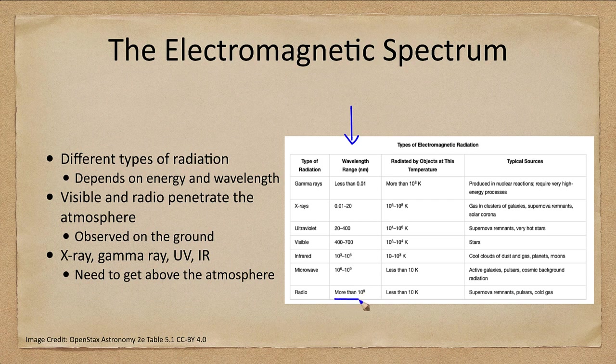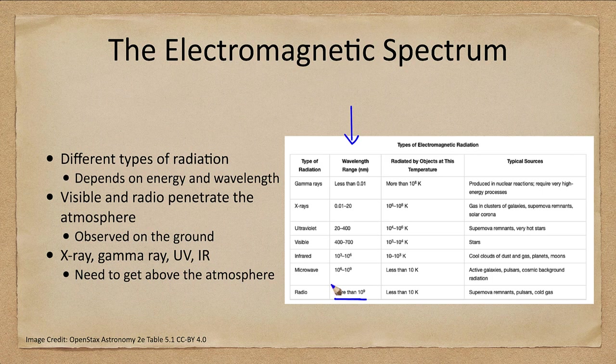A nanometer is a billionth of a meter. So from very long wavelengths, many meters for radio waves, to very short wavelengths, less than one one-hundredth of a nanometer.